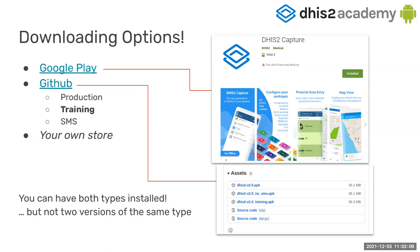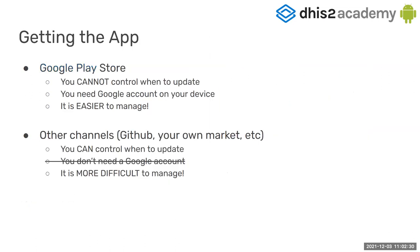We discussed the different installation options on the first day. There are several ways to download the app — most of you went to GitHub to download the training version. I mentioned I would talk a bit more about this. When you decide to install the application from Google Play, as some of you did, and then found out you wanted the training version and had to go to GitHub, the important thing to remember is about version control.